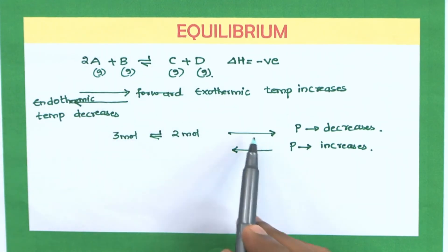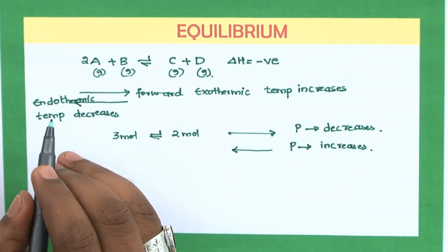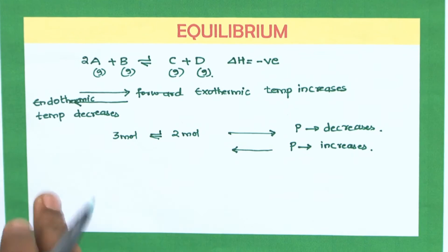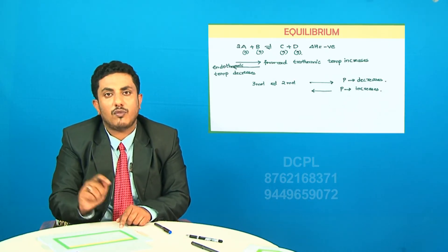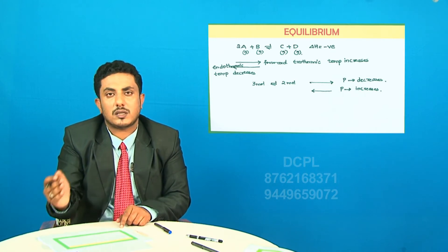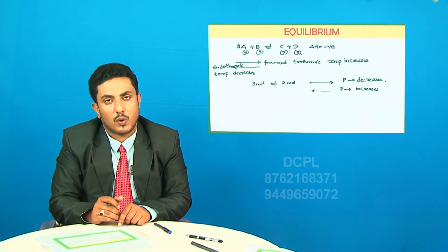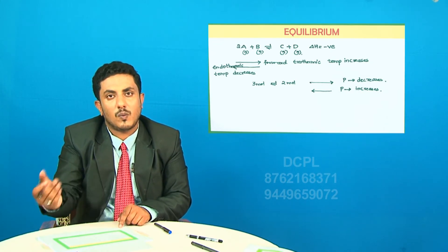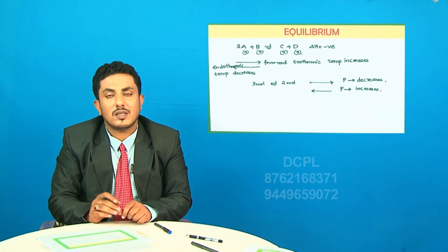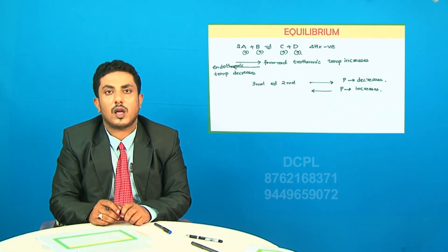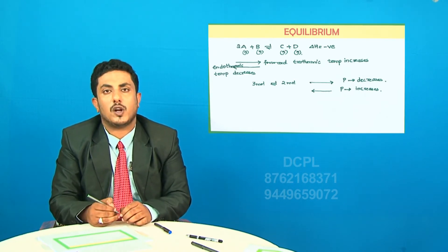So this is the effect of temperature and pressure. Similarly, for concentration: if I increase the concentration of A, the system will try to decrease it by favoring the forward reaction, because in the forward reaction A gets converted to C and D. If I increase the concentration of a product like C or D, the system will favor the backward reaction to decrease that concentration.